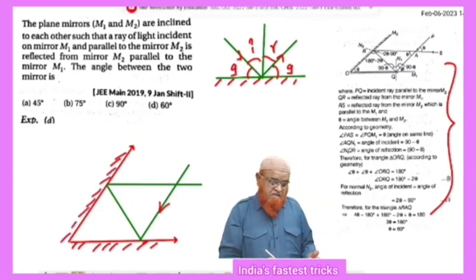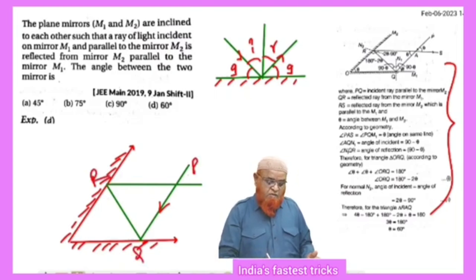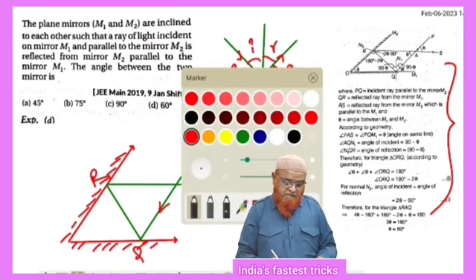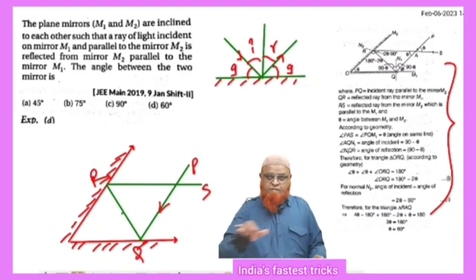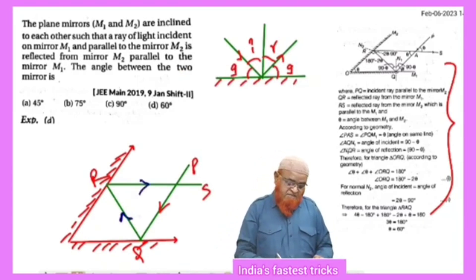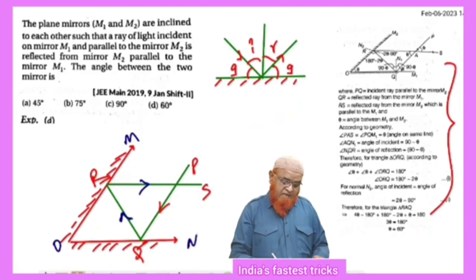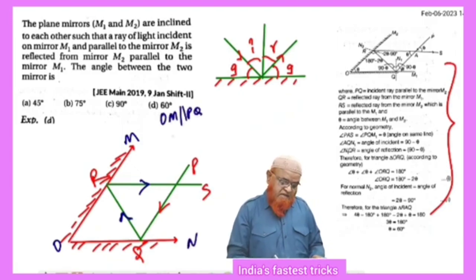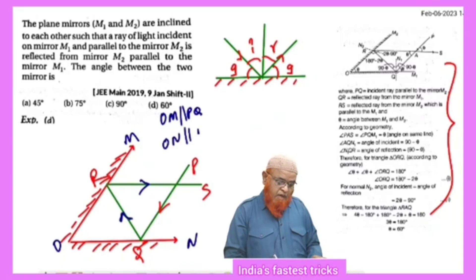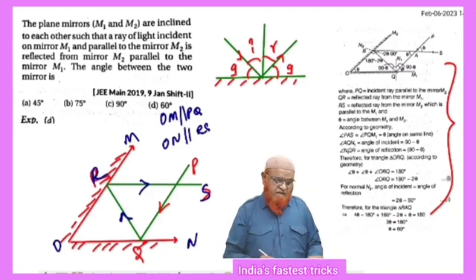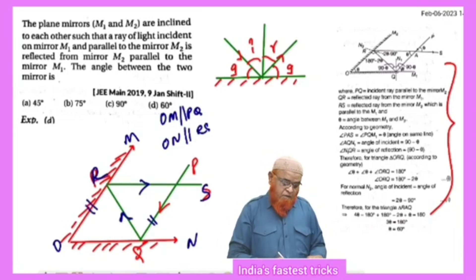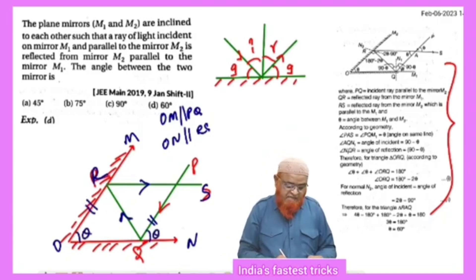The light ray enters so that this is P, Q, R, and S. It is said that OM is parallel to PQ, and similarly ON is also parallel to RS. As PQ and RS are parallel, we can write this angle as theta — and this is also angle theta. These are called corresponding angles.